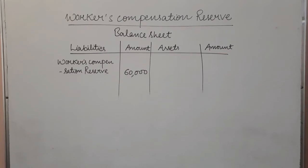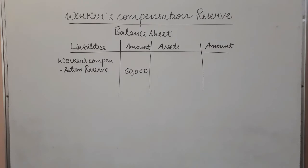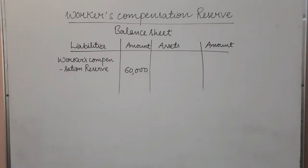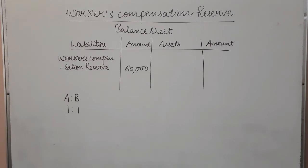So before understanding different cases, first note down this balance sheet, because on the reference basis of this balance sheet I will explain all cases. The balance sheet has liabilities and assets. On the liabilities side, workers' compensation reserve (WCR) is shown as Rs. 60,000. I have also assumed that two partners are A and B with a profit sharing ratio of 1:1, meaning they are equal partners.